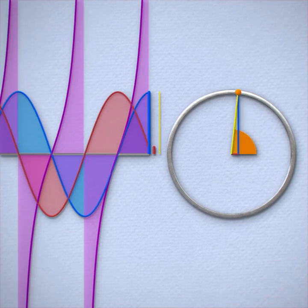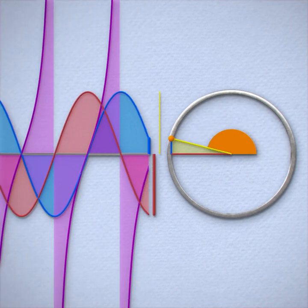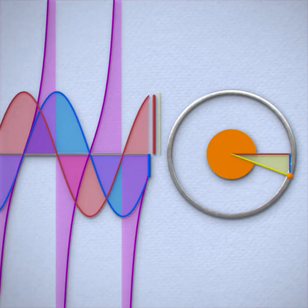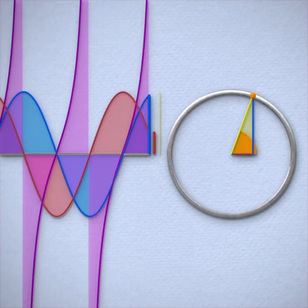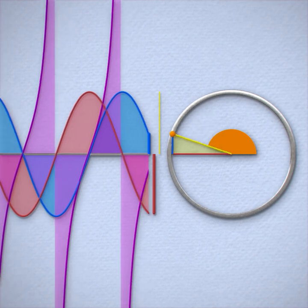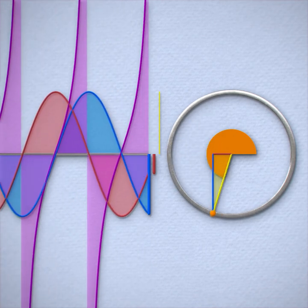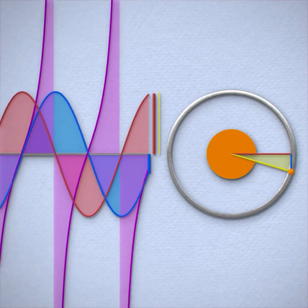Sine, cosine, and tangent are essentially just three different perspectives we can use to look at this pattern of a point rotating with a circle.